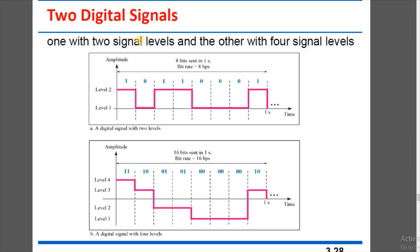Consider two digital signals: one with two signal levels and one with four signal levels. For two signal levels, level 1 means 0 bit and level 2 means 1 bit. Level 1 corresponds to zero volts and level 2 corresponds to positive volts.